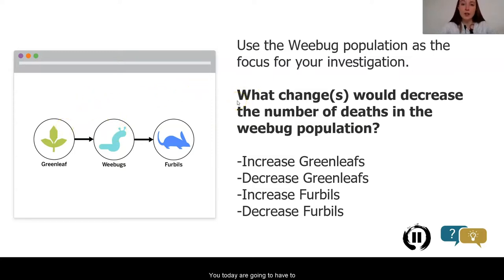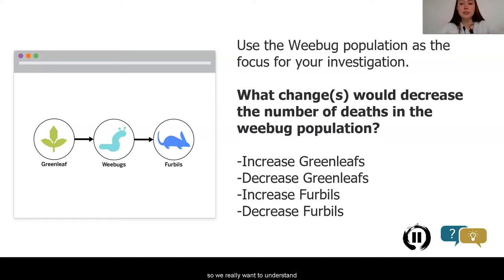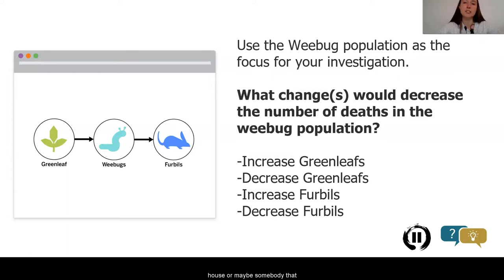You today are going to have to think about what changes are going to decrease the number of deaths in the WeBug population. We know that in the moon jellies, for the balance of births and deaths to become unbalanced, either the births had to increase, or the deaths had to decrease, or maybe both. So we really want to understand what could cause deaths to decrease. I want you to pause the video and discuss with somebody: what is your prediction or your initial idea for what change might affect and decrease the number of deaths in the WeBug population? Good luck!